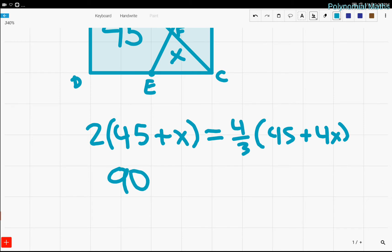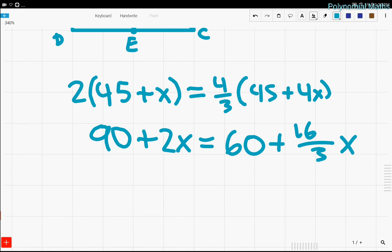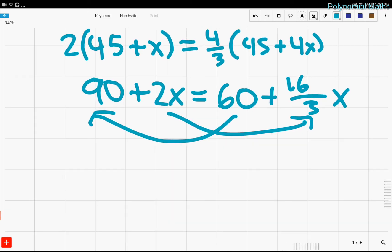So, distributing we have 90 plus 2X equals 60 plus 16 over 3X. And then we subtract the 2X and make it go over here, subtract the 60, it goes over here. And we have 30 equals 10 thirds X.